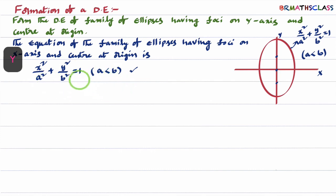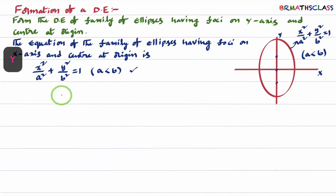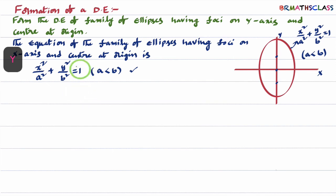Once you have the equation, to form a differential equation, we remember three steps. Step one: identify the number of arbitrary constants — there are two, a and b. Step two: differentiate that many times to eliminate arbitrary constants. After differentiation, if arbitrary constants are eliminated, well and good. Otherwise we go to step three and use the given curve, dy/dx, or d²y/dx² to eliminate arbitrary constants. So we will differentiate this two times.